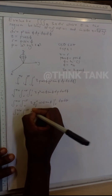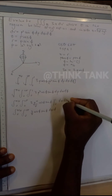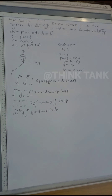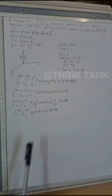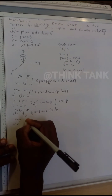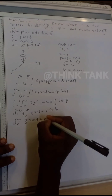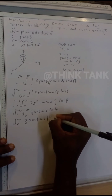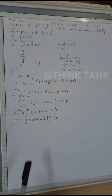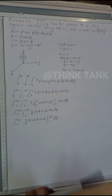Now I integrate with respect to θ. I don't have θ in the expression, so I treat 3/4 cosφ sinφ as constants and just integrate θ. The bounds on θ are 0 to 2π, so this becomes the integral from 0 to π/4 of 3/4 times θ cosφ sinφ, evaluated at 2π and 0, dφ.